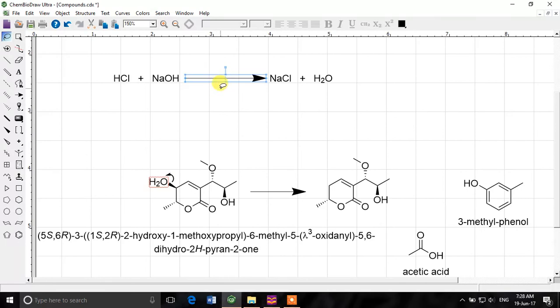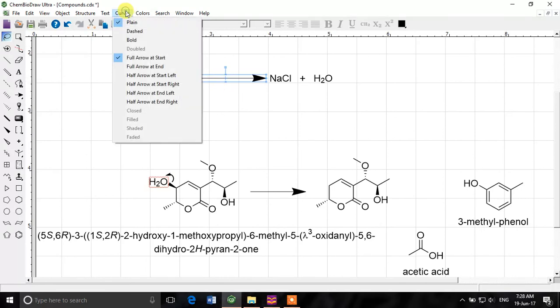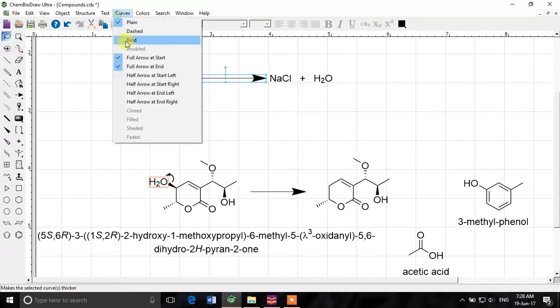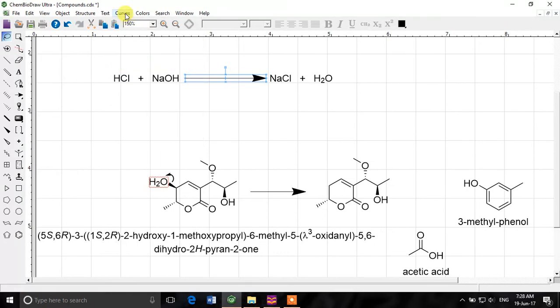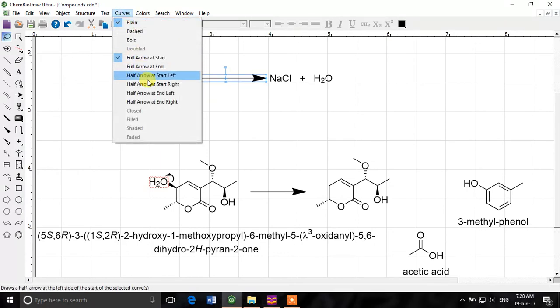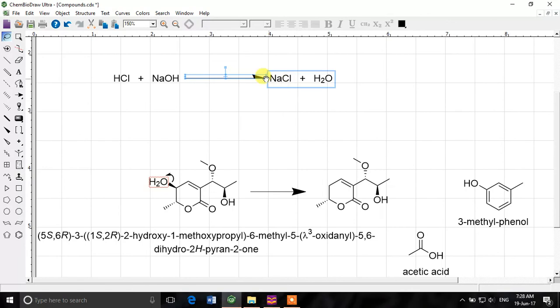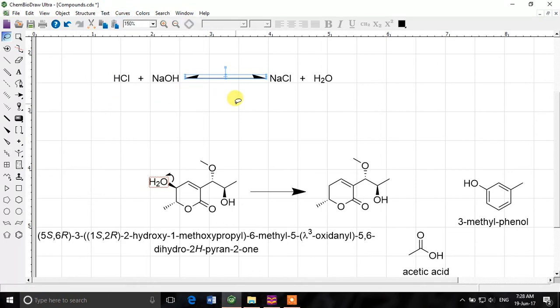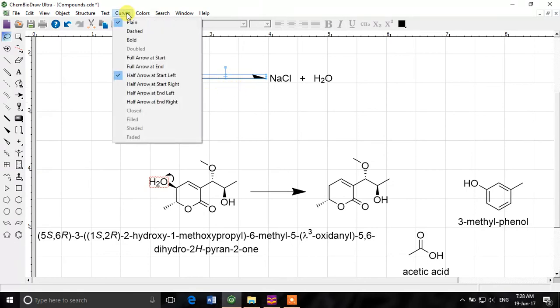So that was about drawing arrows and modeling reactions. And also if you want this arrow to appear differently, you can select it, go to curves and then you can put a full arrow at the end as well. If you want to put half arrow at start left, you can make it half arrow. Half arrow at end right. You can draw half arrow on the other side as well.